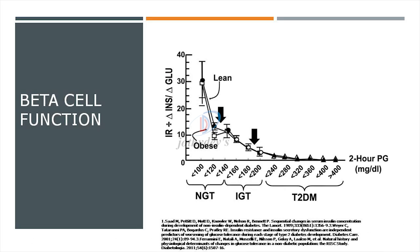Individuals in the upper tertile of normal glucose tolerance — glucose values below 140 mg% — will have lost two-thirds of their beta cell function. Those in the upper tertile of impaired glucose tolerance — glucose below 200 mg% — could have lost 80 to 85 percent of their beta cell function. Shocking! Even before type 2 diabetes is diagnosed, almost 80 to 85 percent of beta cell function is lost — hence the significance of sufficiently early insulin supplementation.